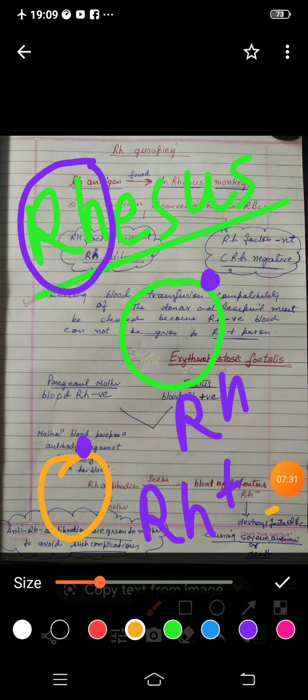Some people have the Rh antigen present inside them. Why do we call it Rh? Because this protein or antigen is similar to the antigen present in the rhesus monkey — they are very similar. That is why people who have this antigen are called Rh positive, and individuals in whom this antigen is absent are known as Rh negative.